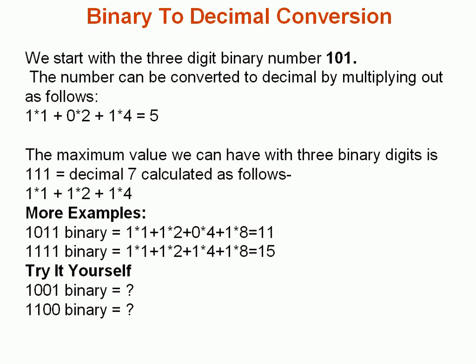Okay, so let's have a quick recap. 101 converts to decimal 5, and we have 1 times 1, 0 times 2, and 1 times 4, which makes it 5. And the maximum value we can have with 3 binary digits is 111, which is decimal 7, and it's calculated as shown below. We have 1 times 1, 1 times 2, and 1 times 4. And a few more examples here. We have binary 1011, and that is 1 times 1, 1 times 2, 0 times 4, 1 times 8, which is decimal 11. And all 1s, 1111, equates to decimal 15.